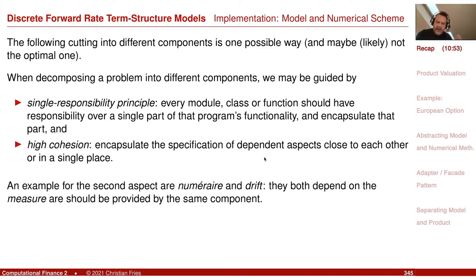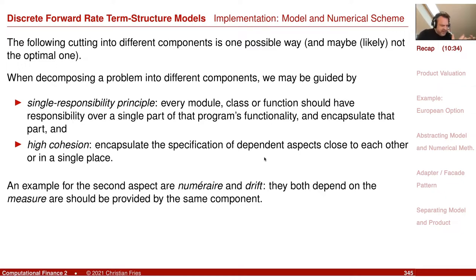I already mentioned two aspects. There's the single responsibility principle: you want your module, class, or function to do only a single task and not depend on too many different aspects. This tries to make components or classes small. But we also like to have high cohesion — we do not want an aspect distributed across several modules.